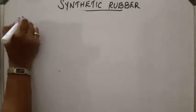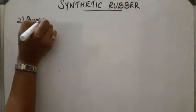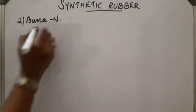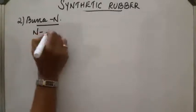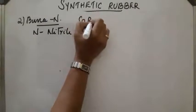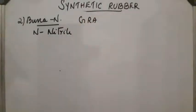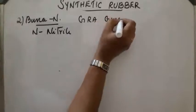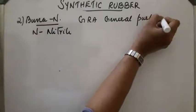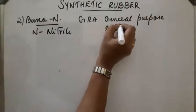Now, the third compound is Buna-N. Here, BU represents butadiene, Na means sodium. We are using sodium as the catalyst and N represents nitrile. It is also called as GRA. GRA means general purpose rubber acrylonitrile.